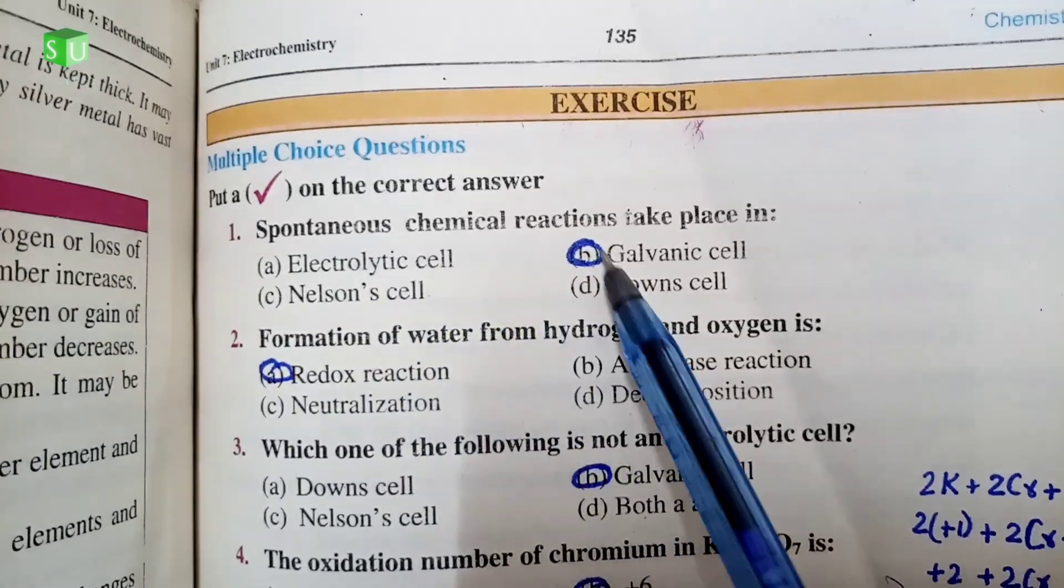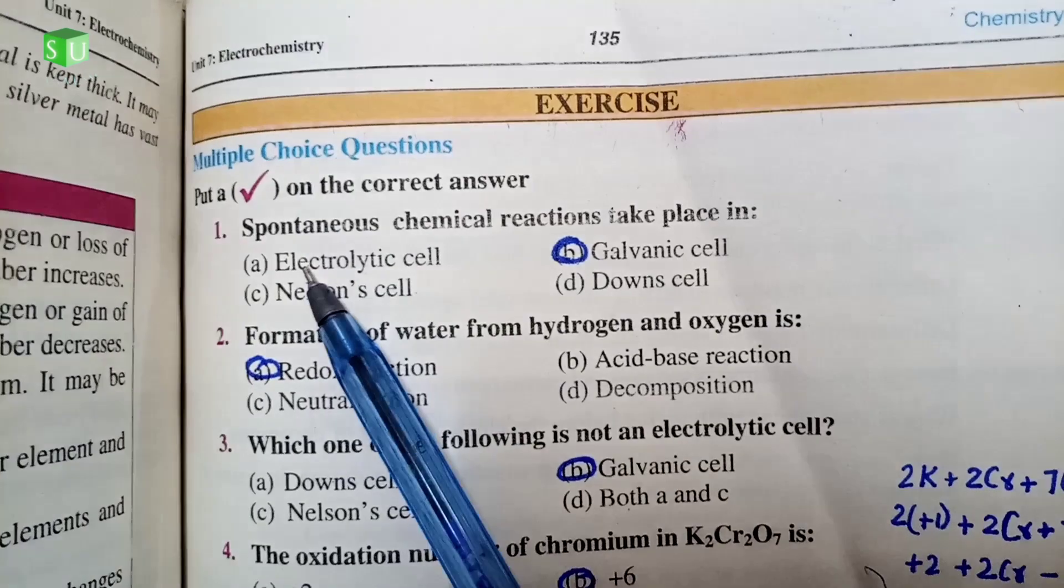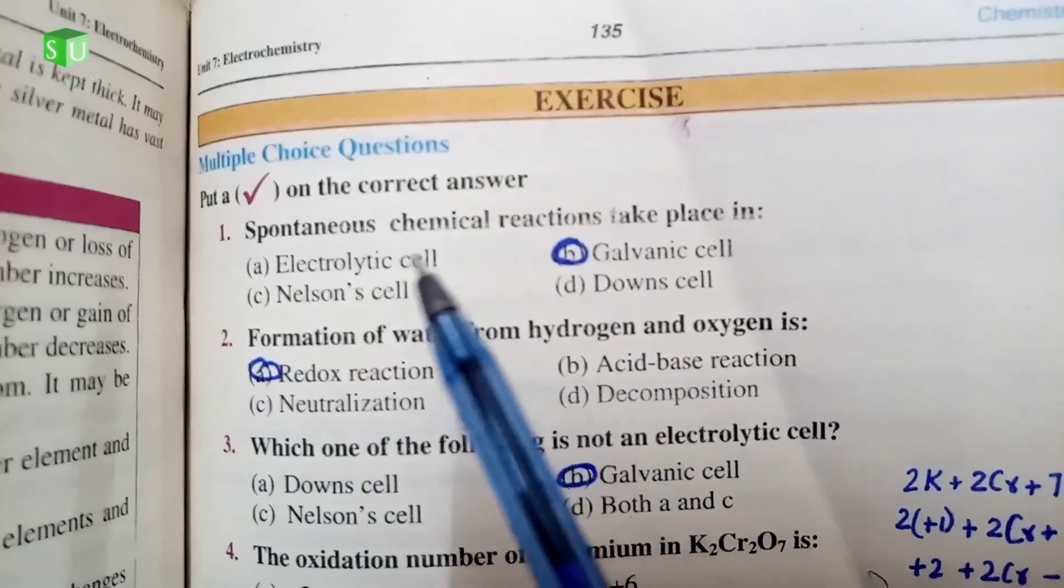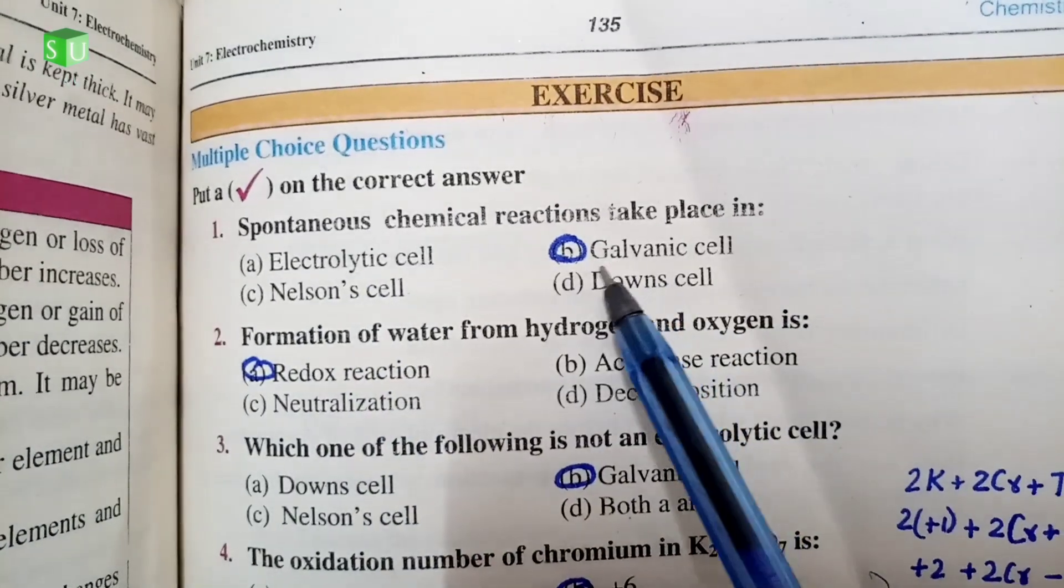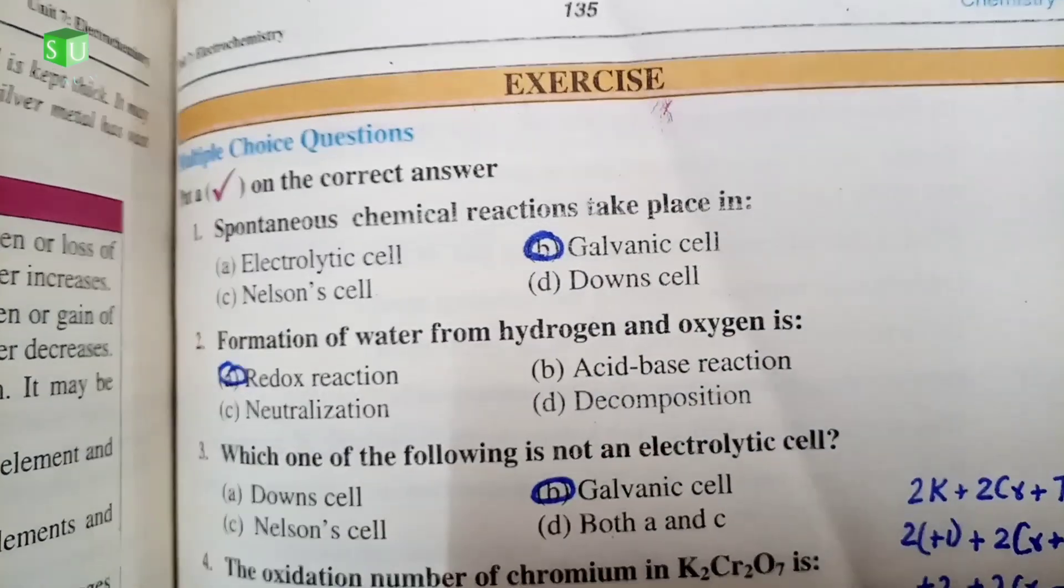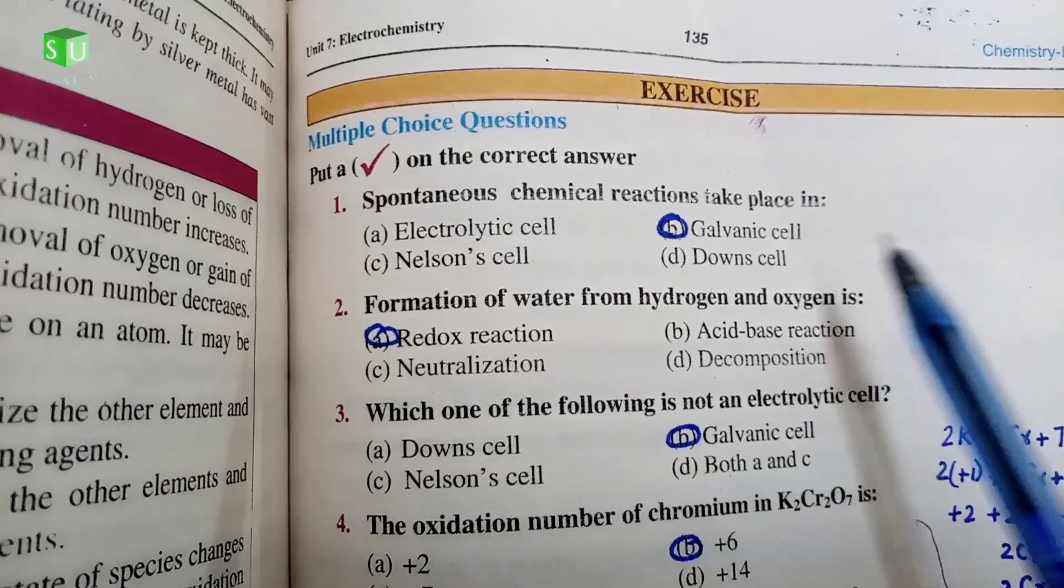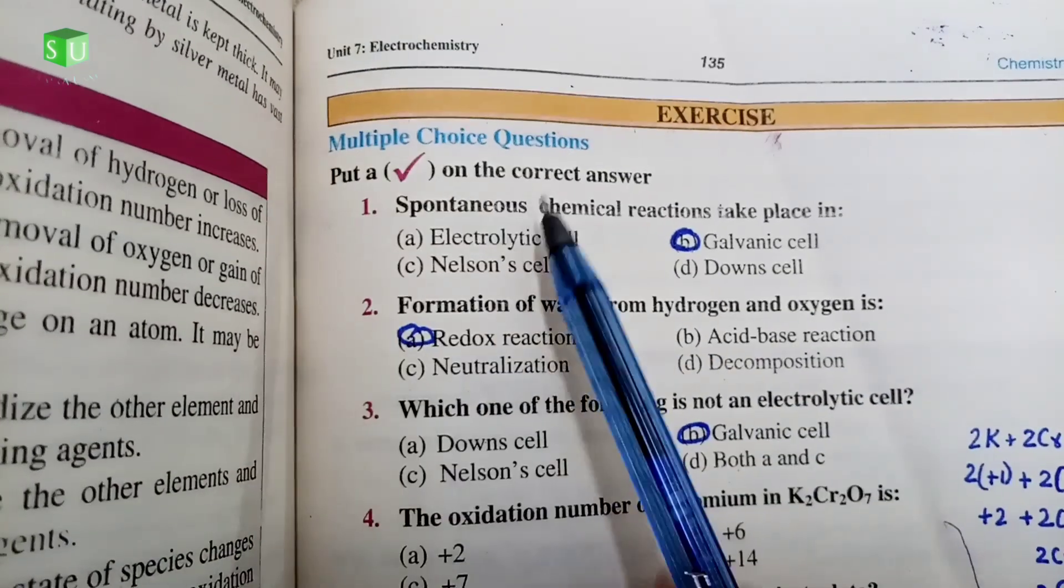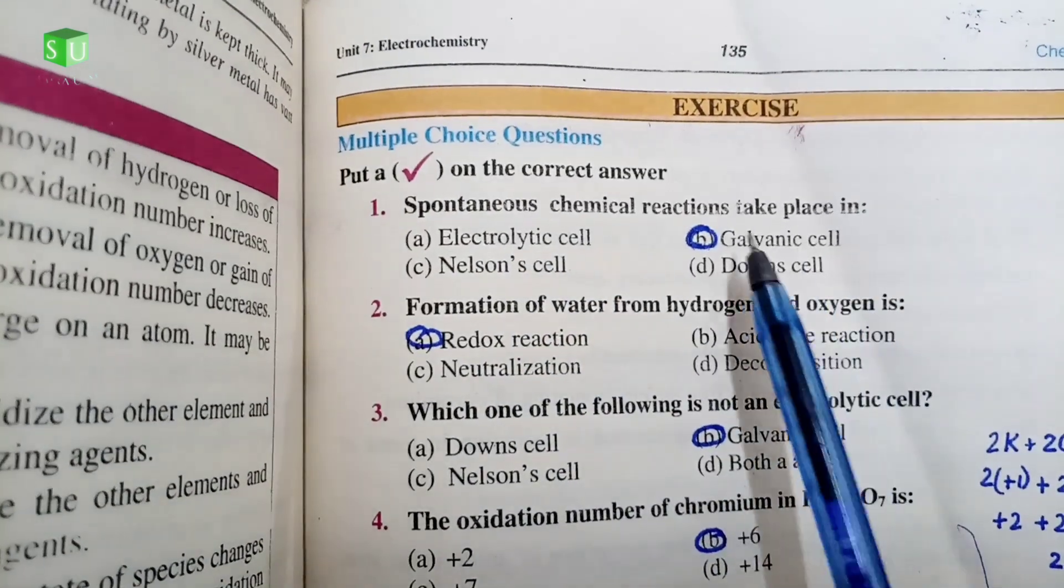Spontaneous chemical reaction takes place in which type of cell? You have 4 examples. The correct answer is galvanic cell. Galvanic cell has spontaneous chemical reaction and as a result, electricity is generated.